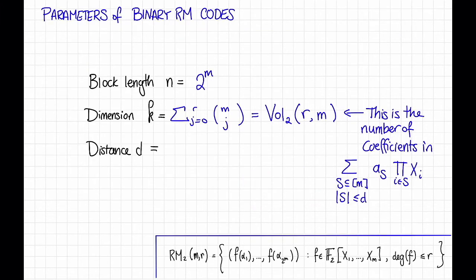So let's go back to our parameters slide here and write that the distance is equal to 2 to the M minus R. Great. So now that we understand the parameters of binary Reed-Muller codes, how about efficient algorithms?